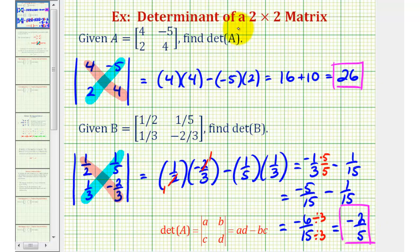Notice for both matrix A and matrix B, the determinant was not equal to zero, which means both matrix A and matrix B have inverses. Okay, I hope you found this helpful.